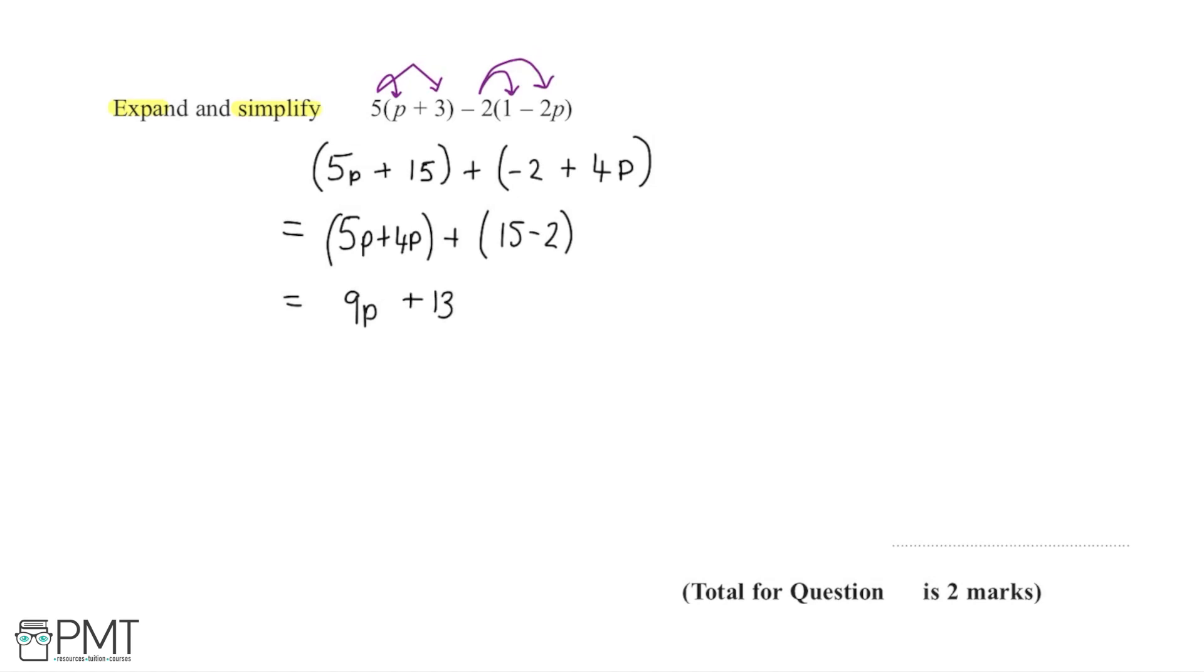These values don't share any factors. 13 is prime, so we know we've got it in its most simplified form. We can't factorize anything out. So that's the final correct answer of 9p plus 13, which gains us the second mark. The first mark was just for starting to expand one of the brackets at the start of the question.